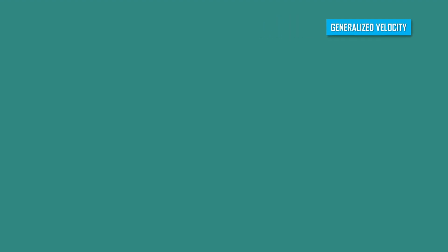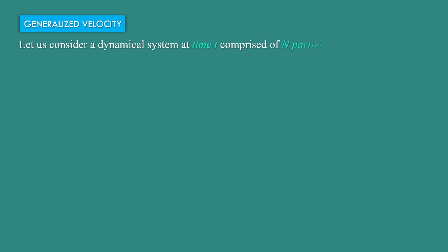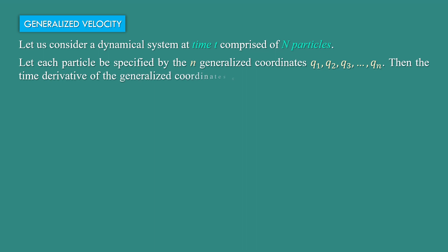Generalized Velocity. Let us consider a dynamical system at time t, comprised of n particles. Let each particle be specified by the n generalized coordinates q1, q2, q3 dot dot dot up to qn.